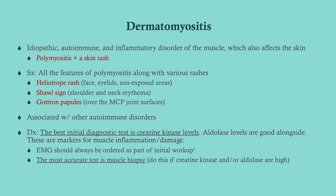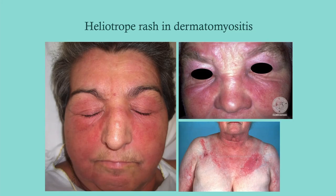Dermatomyositis is essentially polymyositis with a rash — everything else is the same. Look for a heliotrope rash, which resembles a malar rash but is higher up, around the eyes, eyelids, and forehead in sun-exposed areas. Do not confuse it with a malar rash. The shawl sign is erythema over the shoulders and neck. Gottron's papules and Gottron's rash appear over the hands and knuckles.